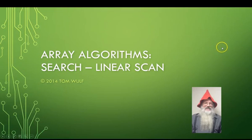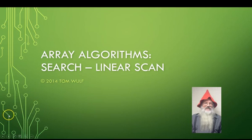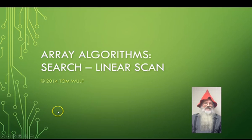We're going to continue with our array algorithms and look at how we search an unsorted array. There's a much better way to search when we know an array is sorted. So when we have an array where we don't know if it's sorted, we have to use this approach called a linear scan or linear search. This also equates to the idea of a brute force algorithm — we start at the beginning and check each element to see if it's the one we're looking for.